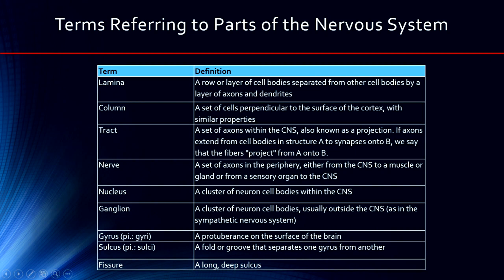We also have different parts of the nervous system to lay out. Laminae are layers of cell bodies in the cortex. Columns are sets of cells perpendicular to the surface of the cortex with similar properties — columns will come up a lot when we talk about vision. Tracks are a set of axons known as projections, going from A to B. Nerves are also a set of axons in the periphery. A nucleus is a cluster of cell bodies within the central nervous system. Ganglia are clusters of neuron cell bodies usually outside the central nervous system. Then we have gyri and sulci: a gyrus is a protuberance on the surface of the brain, a sulcus is a fold or groove separating one gyrus from another, and a fissure is a long, deep sulcus.